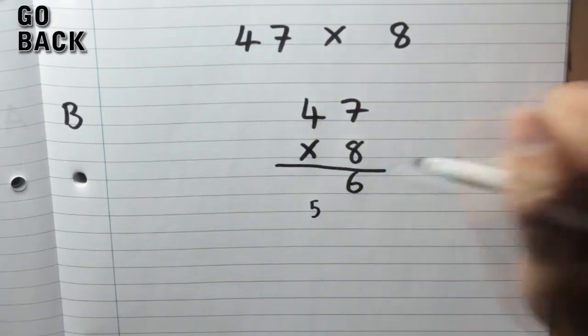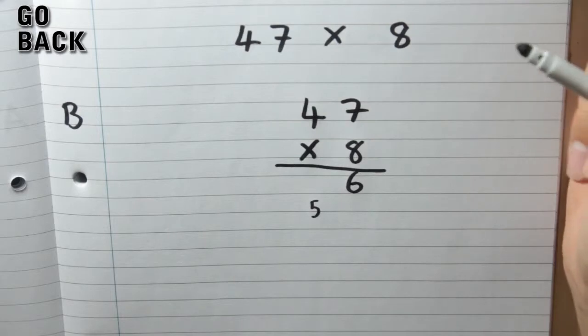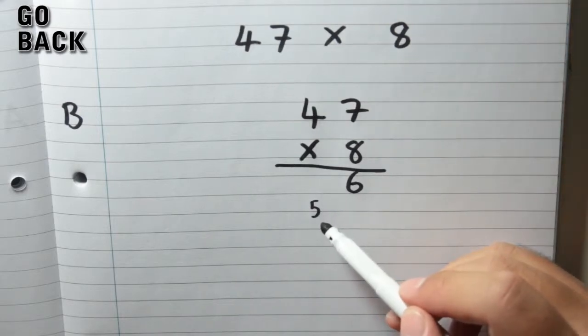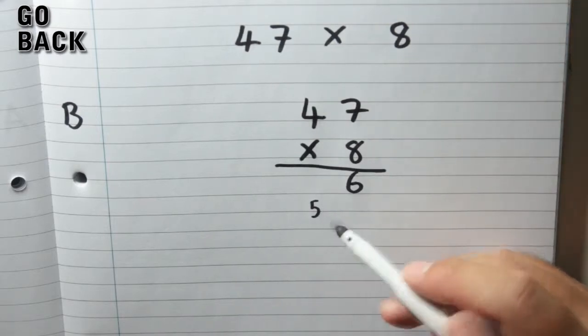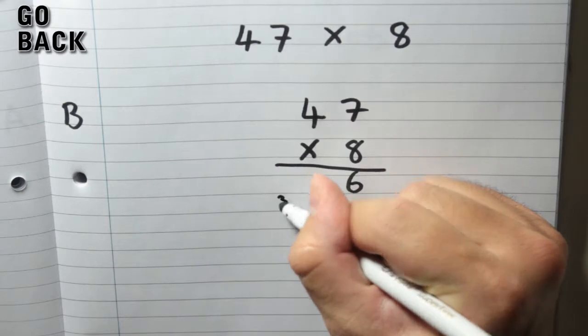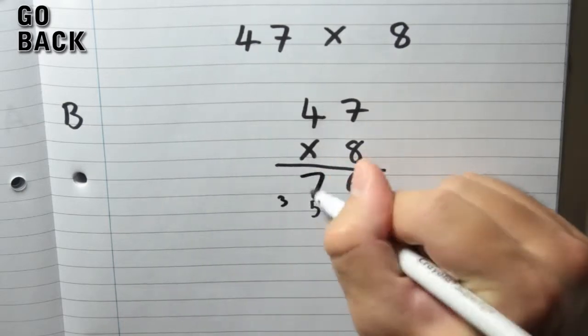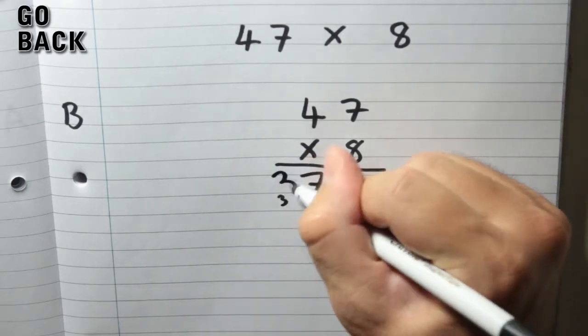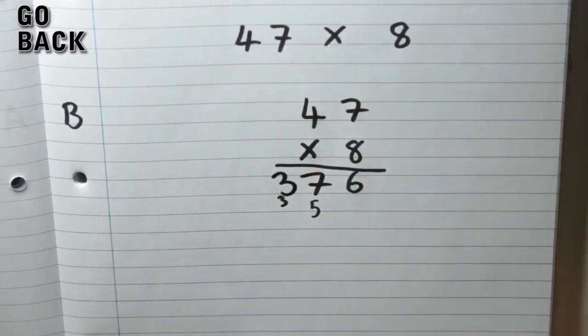And then it's 4 times 8. Now 4 times 8 is 32, add on the 5, gives you 37, so a little 3 there and a 7, and then bring up the 3 to give you 376.